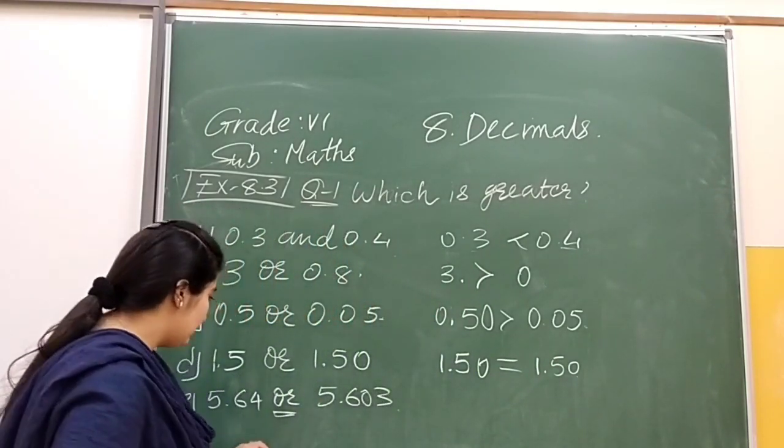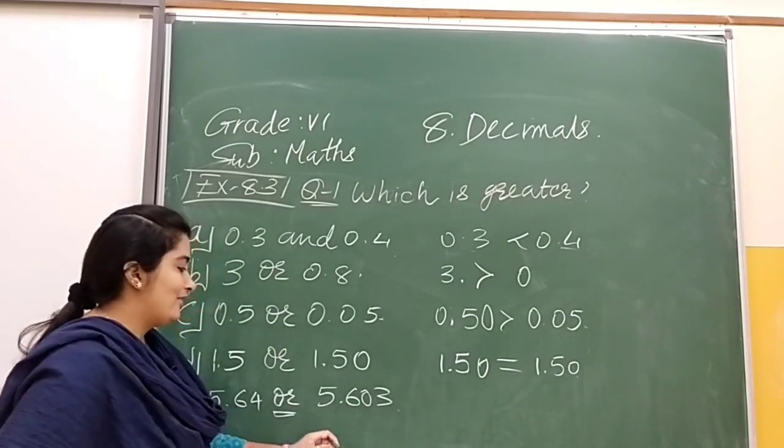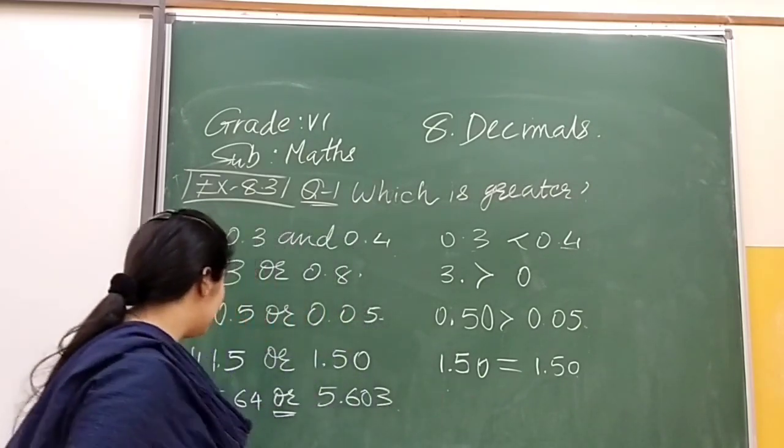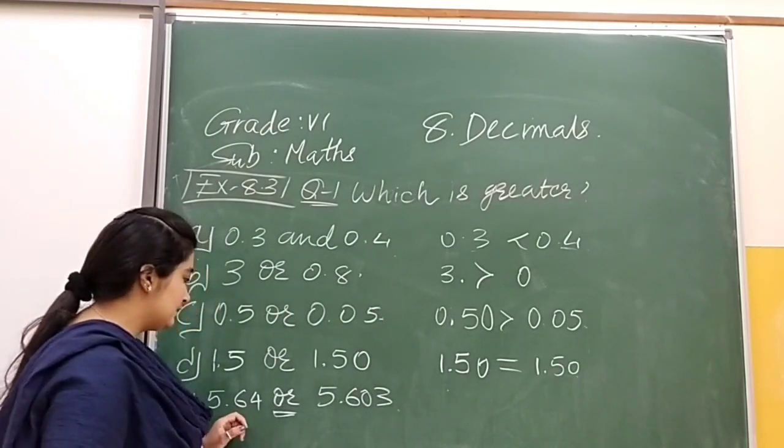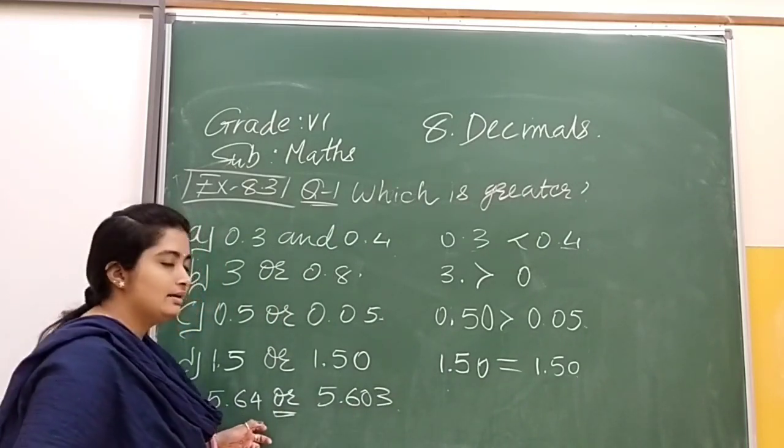Now we have 5.64 and 5.603. The ones place is the same in both. Also we have the tenths place. The tenths place is also the same in both. So we will move to the hundredths place.